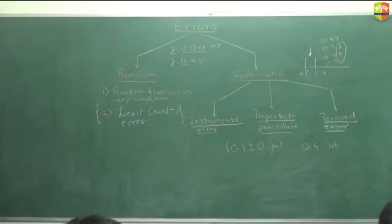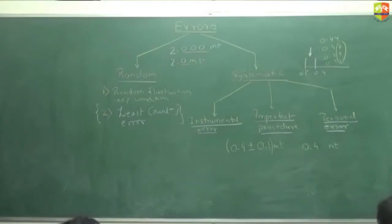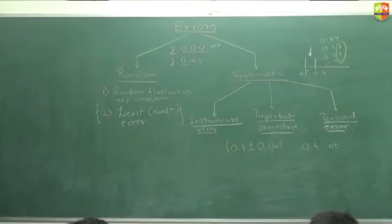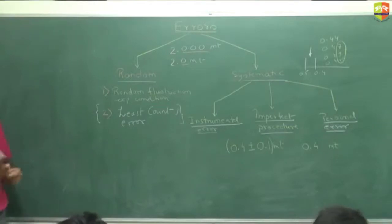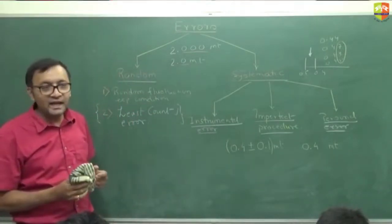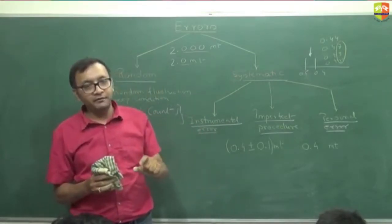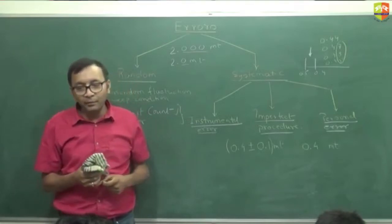So now finally something mathematical is coming up. Let's talk about that. Random errors can lie on both sides — by both sides I mean that the error could be added to the actual value or subtracted from the actual value. You don't know. It can lie on both sides.